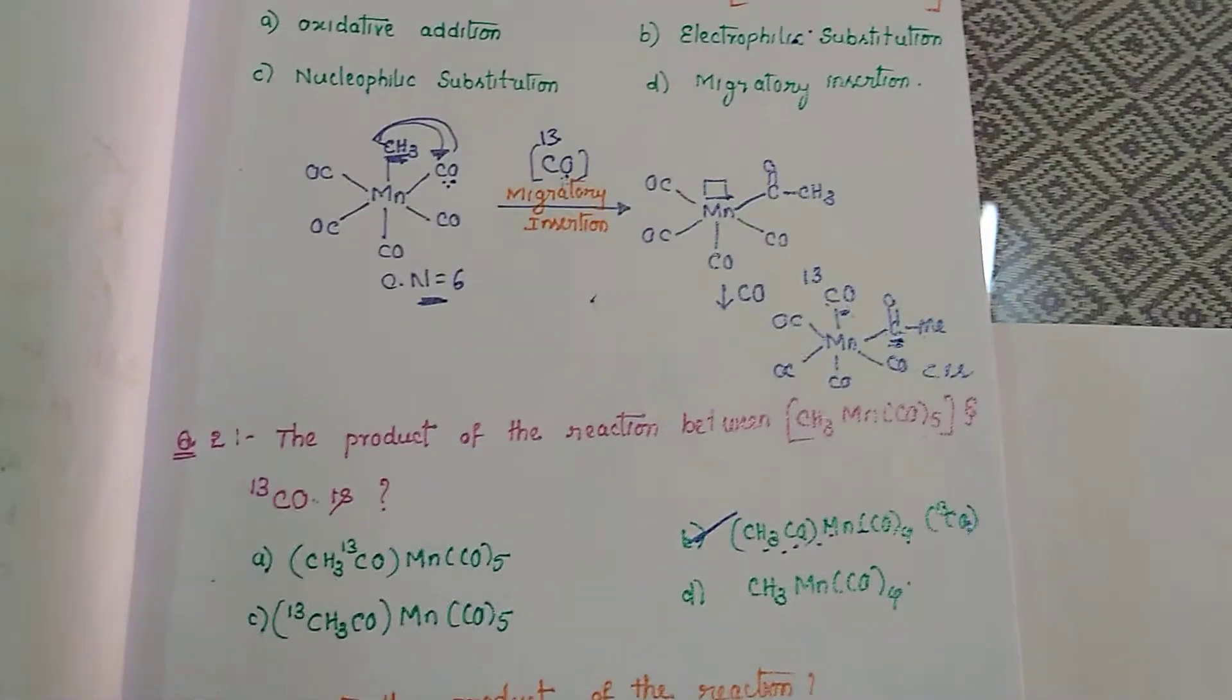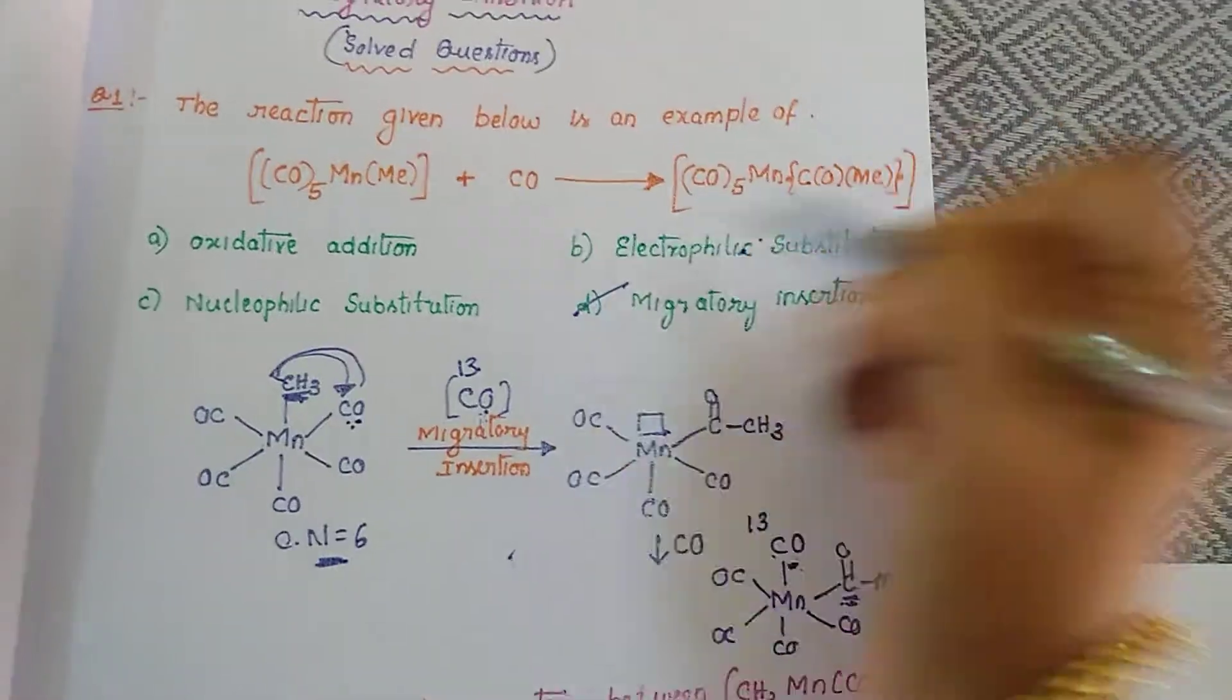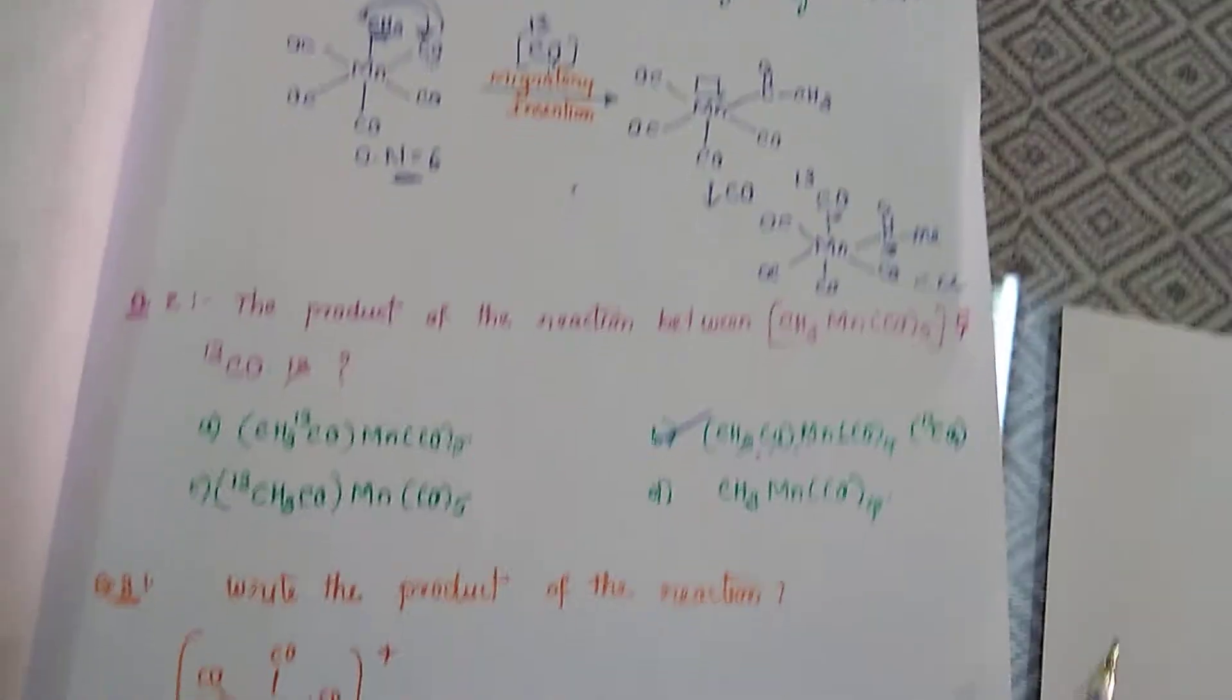So the C13 is directly attached to the manganese rather than in the CO-CH3 form. So option B will be the right answer. The reaction is an example for migratory insertion. Next question.